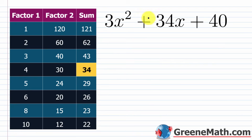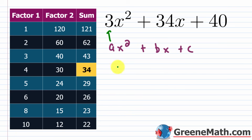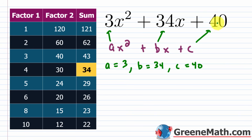Starting with 3x² + 34x + 40, I'm going to factor this using the AC method first. We match this up with ax² + bx + c, so a = 3, b = 34, and c = 40. The idea is to find ac, which is 3 times 40 = 120. We want two integers with a product of 120 and a sum of b, which is 34.